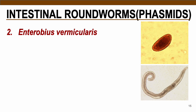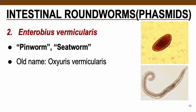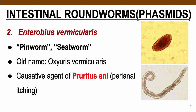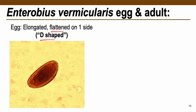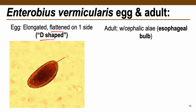The next intestinal roundworm is Enterobius vermicularis, also known as the pinworm or sitworm. The old name is Oxyuris vermicularis, and it is the causative agent of pruritus ani (perianal itching). Eggs are elongated with one flattened side, described as D-shaped eggs. For adults, note the presence of cephalic alae or esophageal bulb.